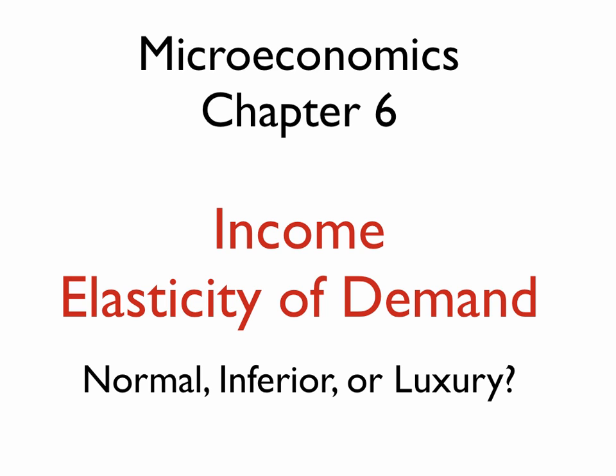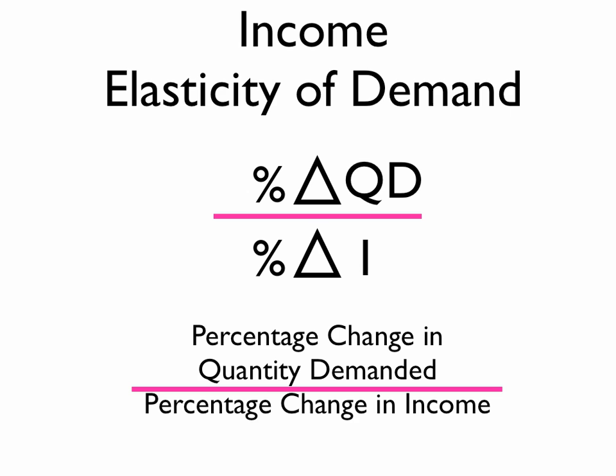In this video, we want to continue our discussion about elasticity and talk about income elasticity of demand. This allows us to determine if a good is a normal good, an inferior good, or a luxury good. The formula for income elasticity of demand is percentage change in quantity demanded divided by percentage change in income. Note that the denominator is percentage change in income, not percentage change in price.